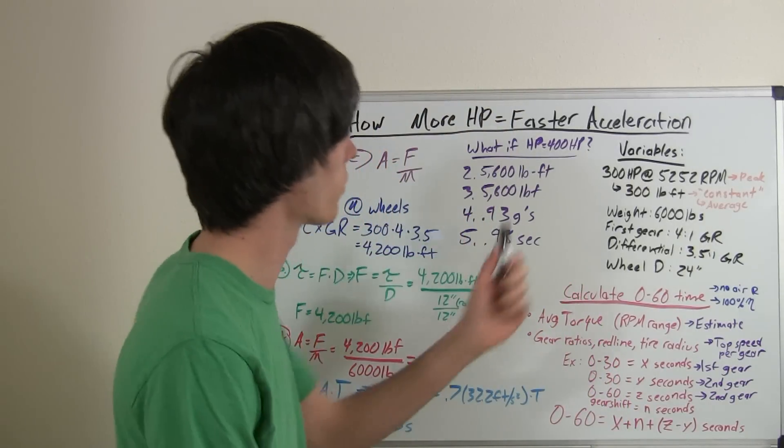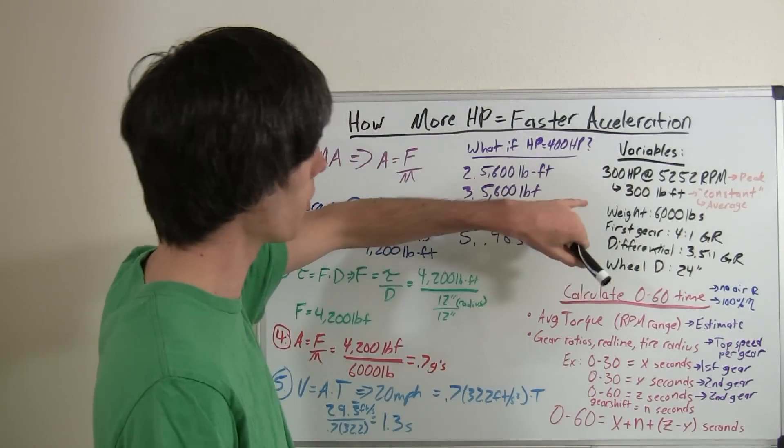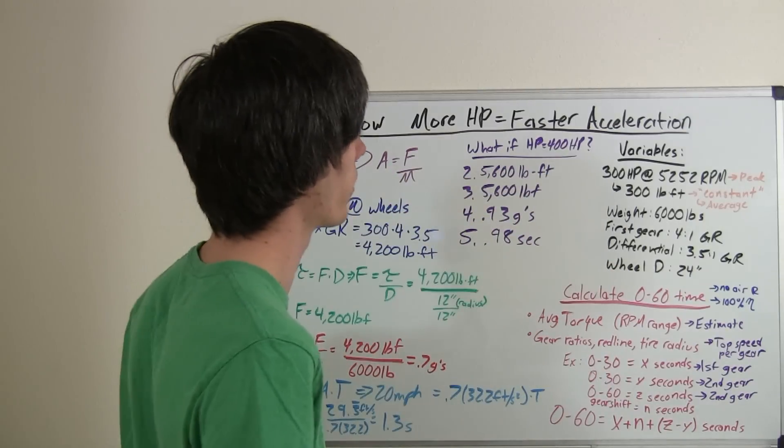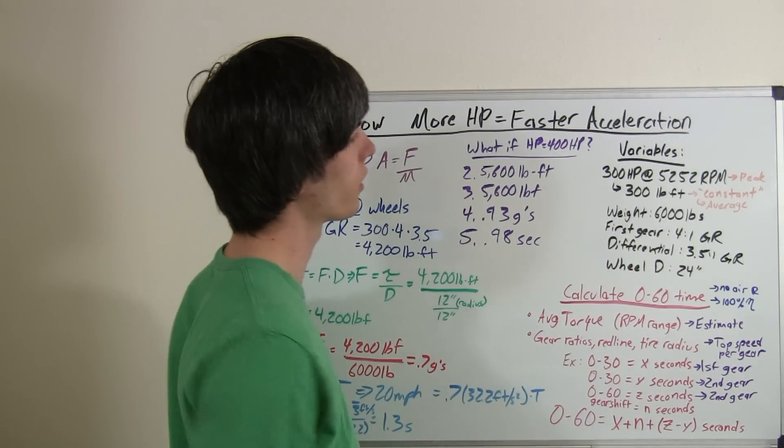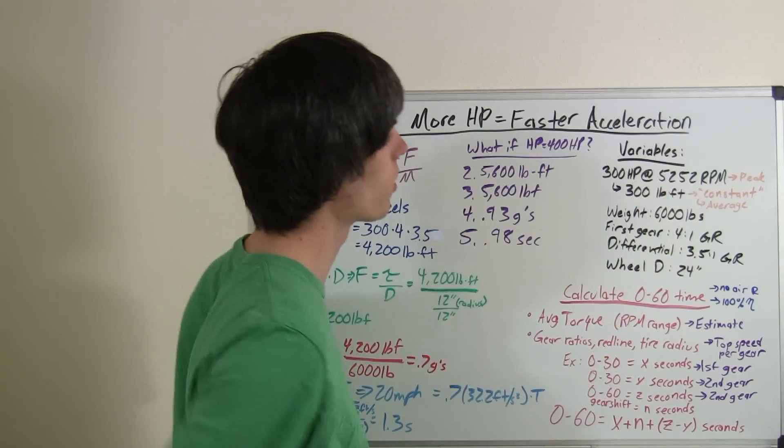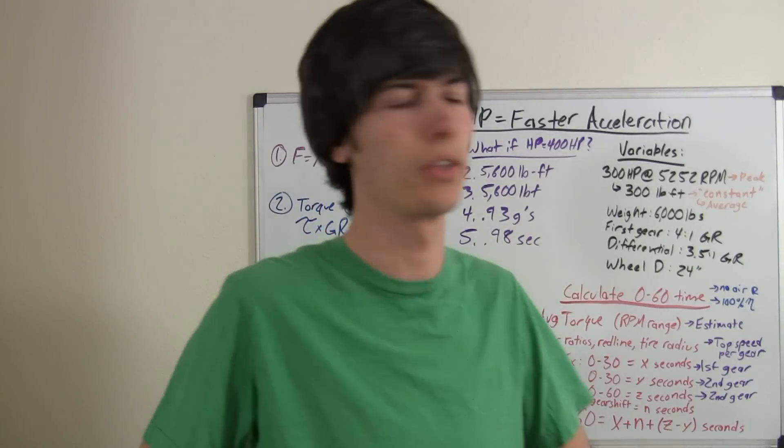So to start off, we're going to have to set some variables here. And we're just going to say we've got a truck or car or whatever, and it produces 300 horsepower. That's its peak horsepower at 5,252 RPM.